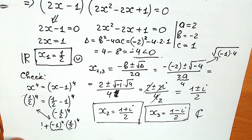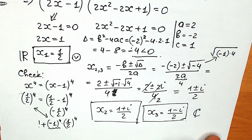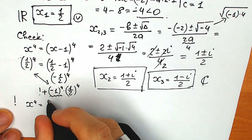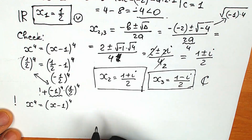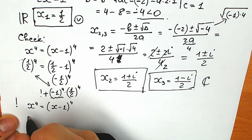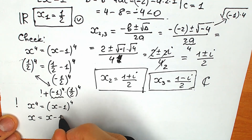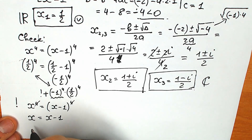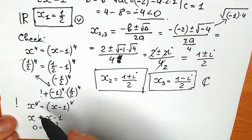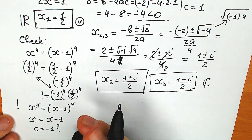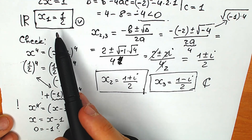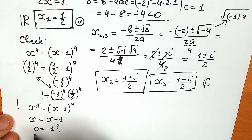A few extremely important notes: many students see x to the power 4 equal to x minus 1 to the power 4 and simply cancel the fourth power on both sides, getting x equals x minus 1, which leads to 0 equals minus 1. They get confused because they don't know what went wrong.